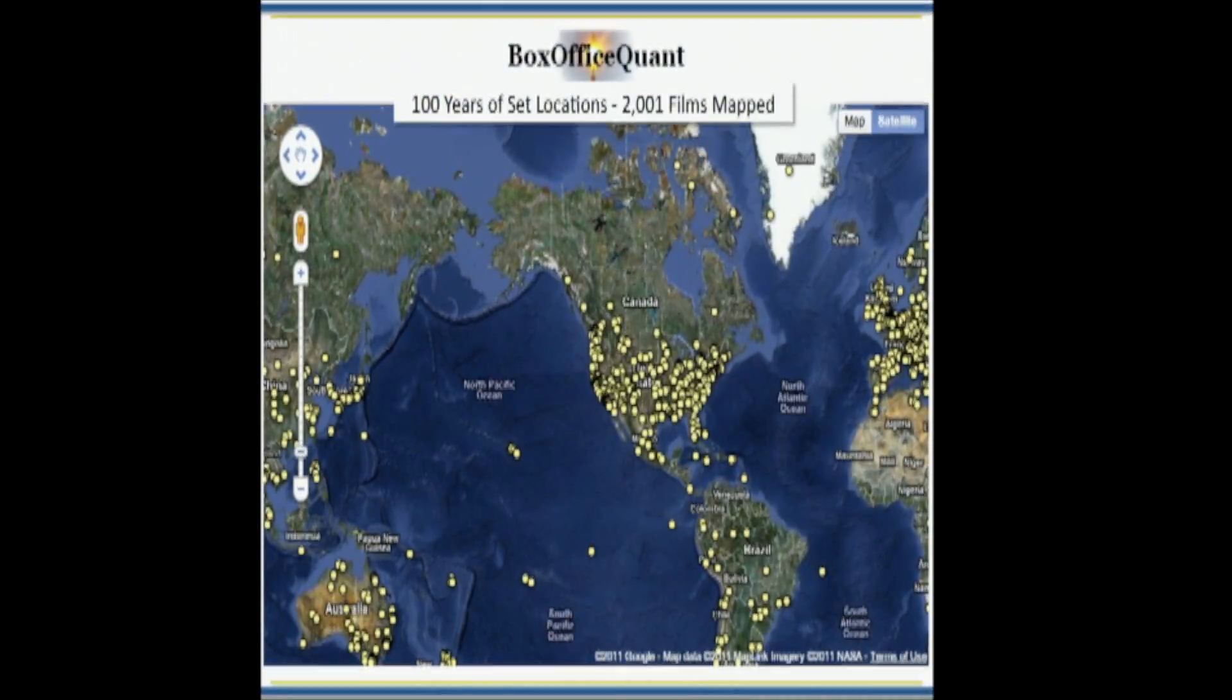It's called 100 Years of Set Locations. And I took 2001 films, top movies on IMDb, and I found about 10,000 other set locations where they were filmed, and I put them on a Google map. You can play with this on the website, Box Office Quant, but let's give you a quick demo to play around with it.